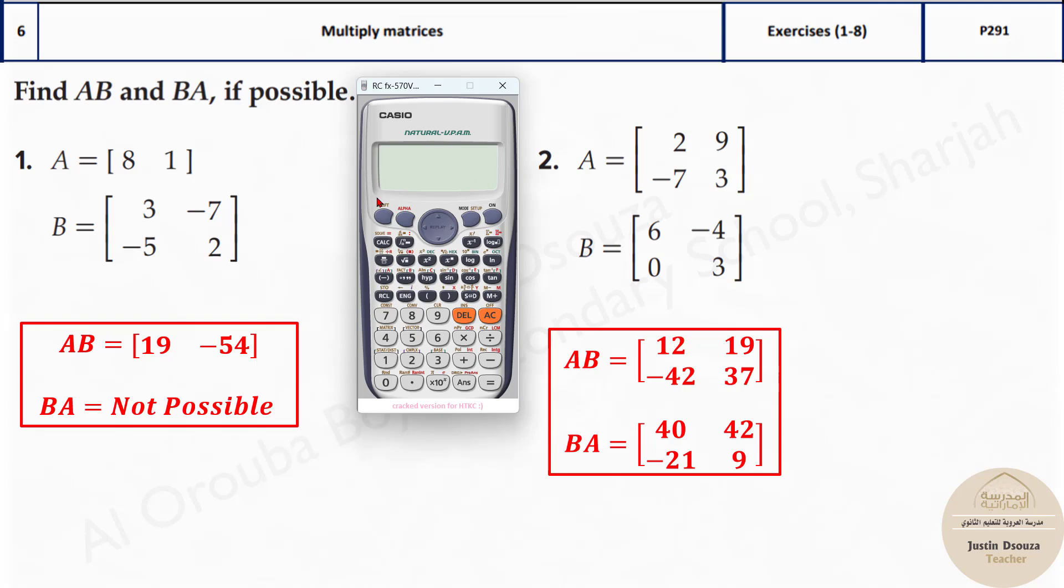For that you need to again press shift 4 and press B, that is option 4, multiplied by shift 4 option 3, that is matrix A, make it equal. So this is the answer now 40, 42, minus 21, and 9.